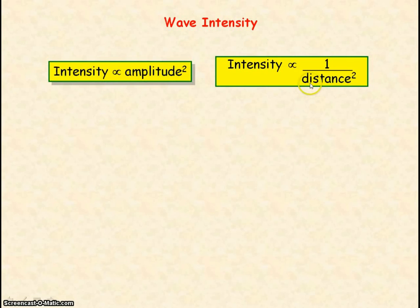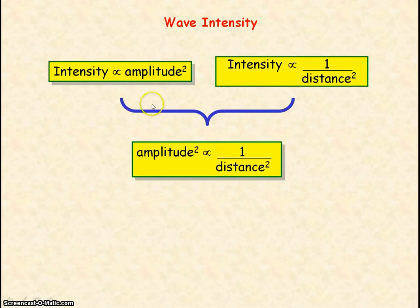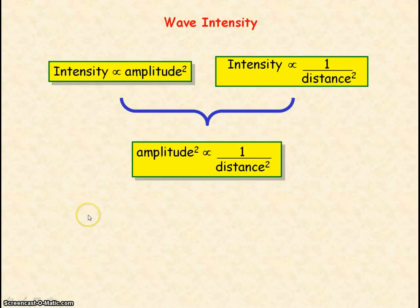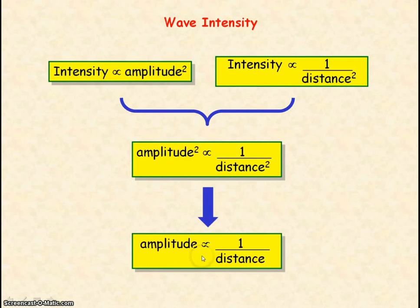Wave intensity is directly proportional to amplitude squared, and also inversely proportional to distance squared. Looking at both these relationships, amplitude squared is proportional to 1 divided by distance squared — that is, amplitude squared is inversely proportional to distance squared. Taking the square root of both sides, amplitude is inversely proportional to distance. So if we double the distance from the point source, the amplitude of the wave halves. If we are three times the distance away, the amplitude will be a third.